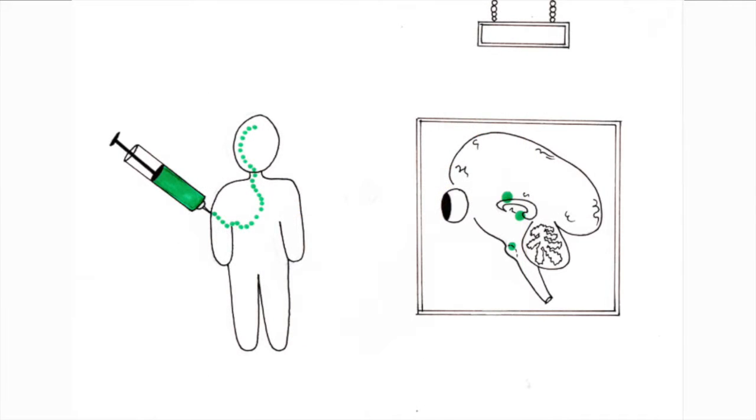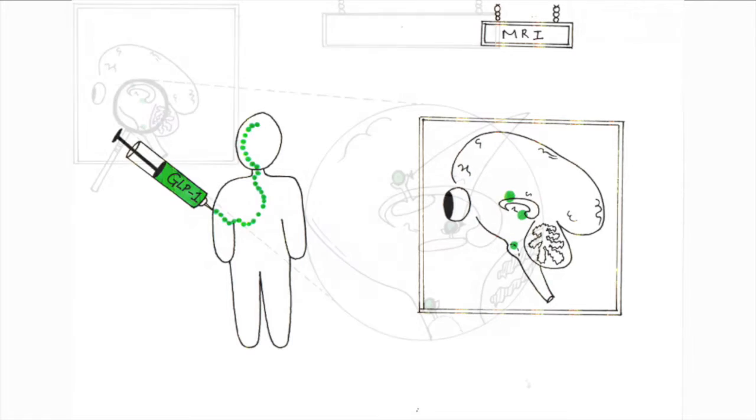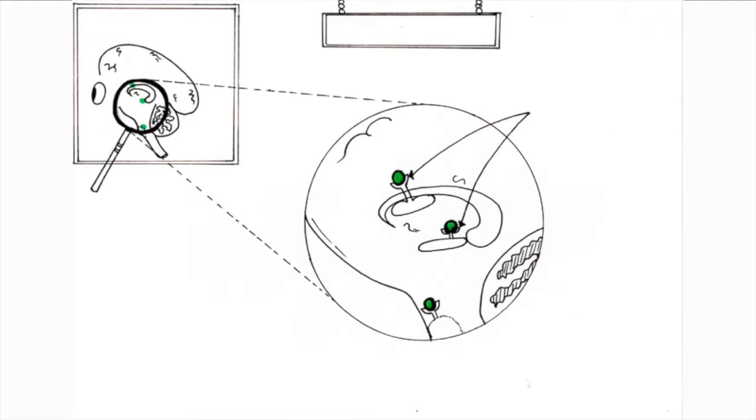A glucagon-like peptide 1 analogue, when injected into the periphery, is taken up by discrete areas of the brain related to hunger and fullness. This GLP-1 analogue binds to the subcortical areas of the brain,